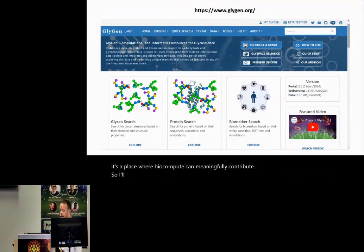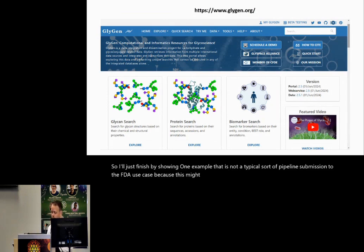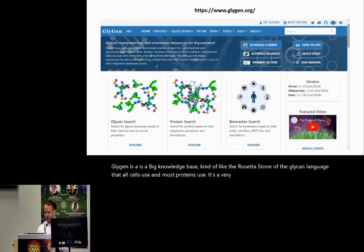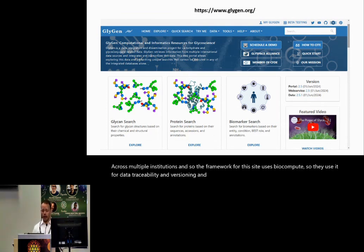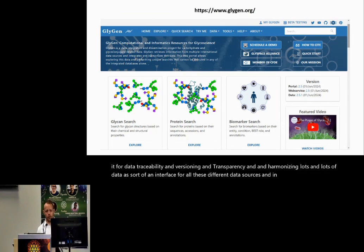So I'll just finish by showing one example that is not a typical sort of pipeline submission to the FDA use case because this might be more relevant. GlideGen is a big knowledge base, kind of like the Rosetta Stone of the glycan language that all cells use and most proteins use. It's a very large, multi-institutional knowledge base supported by the United States NIH Common Fund across multiple institutions. And so the framework for this site uses biocompute. So they use it for data traceability and versioning and transparency and harmonizing lots and lots of data, as sort of an interface for all these different data sources. And in fact, you can download BCOs for any of them to understand how a particular piece of data ended up there.